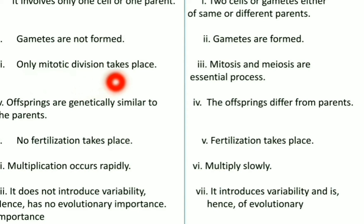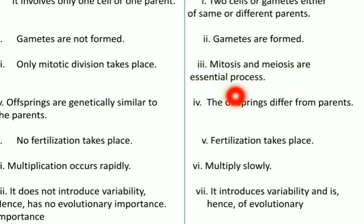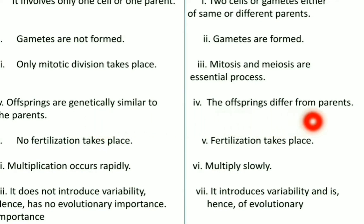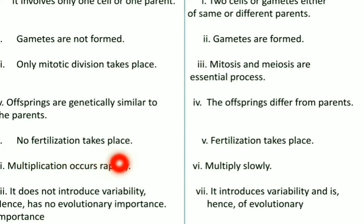Only mitotic division takes place in asexual reproduction, while mitosis and meiosis are essential processes in sexual reproduction. Offsprings are genetically similar to the parents and are known as clones in asexual reproduction, whereas offsprings differ from parents in sexual reproduction. No fertilization takes place in asexual reproduction, whereas in sexual reproduction fertilization takes place.